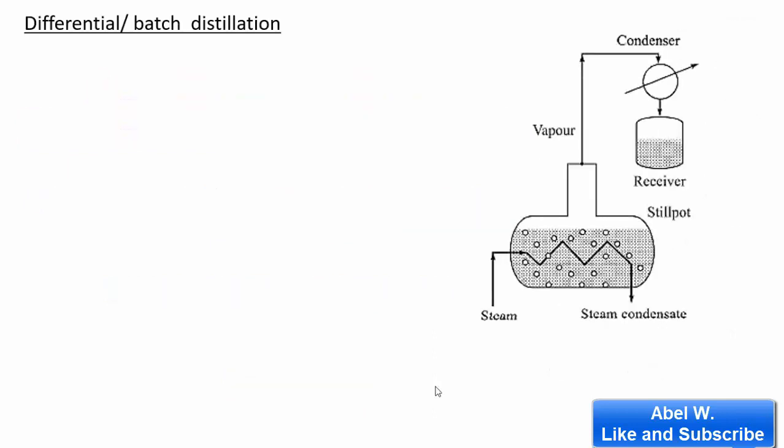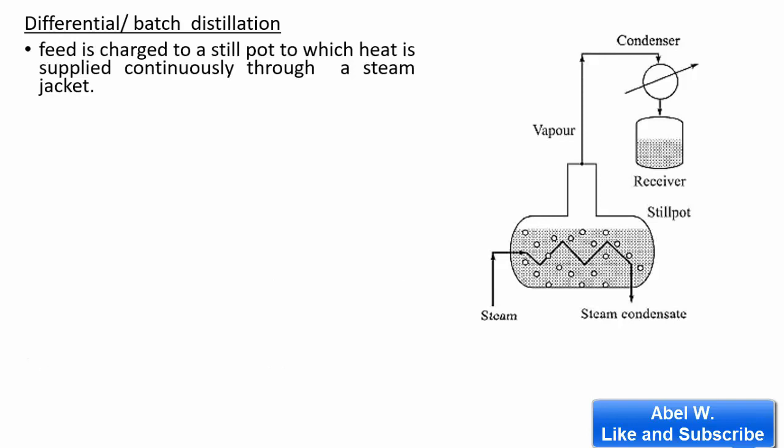Welcome to my YouTube channel. Today we will discuss differential and batch distillation. As many of you know, in distillation you can have two kinds of operation: continuous operation, where there is a continuous feed of liquid mixture to the still, or a batch process where a whole batch of feed is added to a distillation column or distillation still.